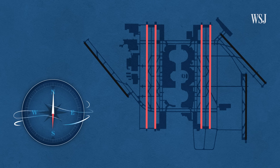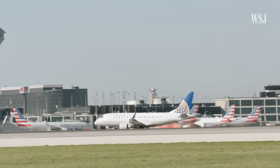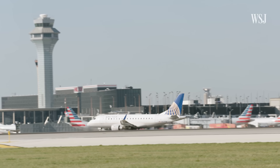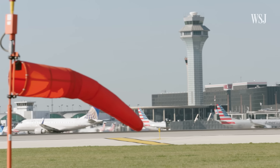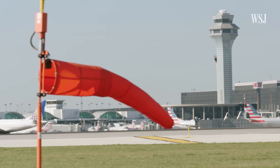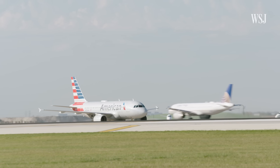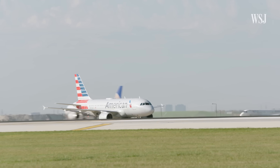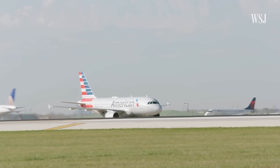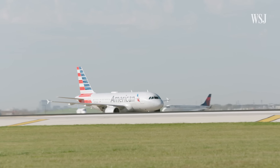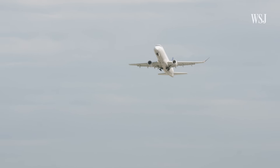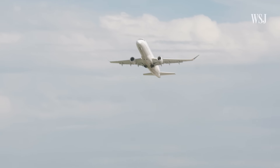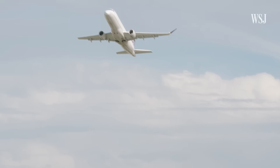The reason is headwind. Planes function best when departing and arriving into a headwind, as it helps give departing planes lift and slow down arriving planes. Tailwinds and crosswinds, though manageable, can impact aircraft performance, making takeoffs and landings tough. Therefore, runways want to be oriented in a north-south direction at places like Dallas-Fort Worth.